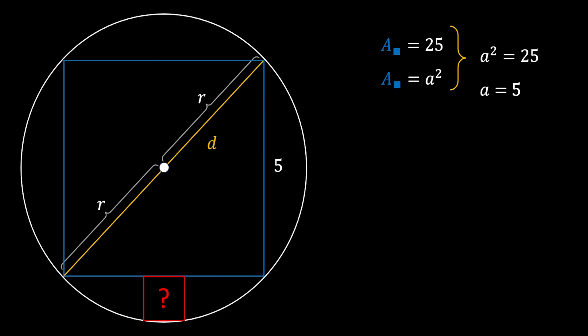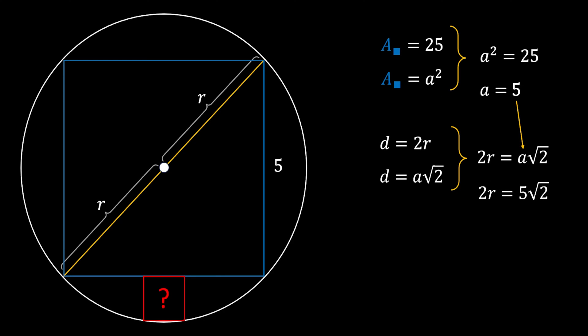That means diagonal D must equal 2 times R. Since the formula for the diagonal of a square is a times the square root of 2, we can combine those to get 2R = a√2. Substituting a = 5, the radius of our circle equals 5√2 over 2.